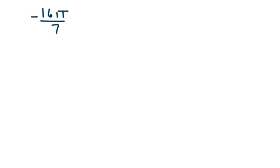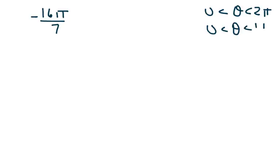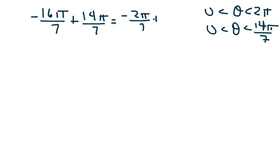The next example is negative 16 pi over 7. Right away I know that's not between 0 and 2 pi. With 7 in the denominator, 2 pi is 14 pi over 7. So I add 14 pi over 7: negative 16 pi over 7 plus 14 pi over 7 gives negative 2 pi over 7. Still not in range, so I add another 14 pi over 7 and get 12 pi over 7.